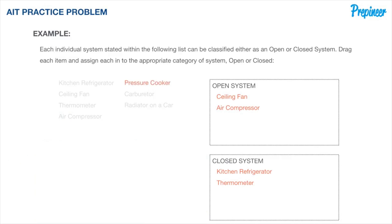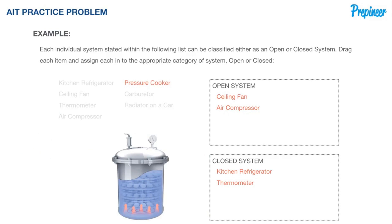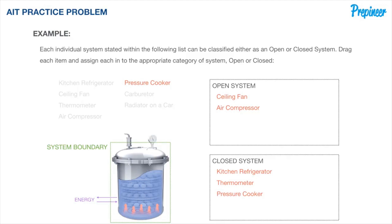What about a pressure cooker? There is the pressure cooker with its system boundaries marked. Neglecting any nominal amount of steam leakage, a pressure cooker is a closed system. It supplies heat but does not exchange any mass with the environment outside of its system boundaries.